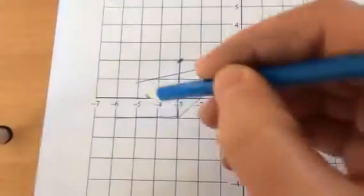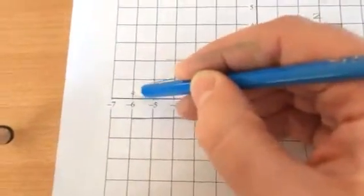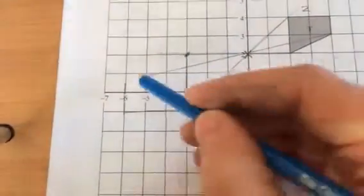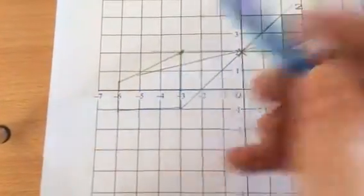That side there is 1. So that side is going to go up 1.5 to there along the minus 6 line. And then we connect there. And that is our shape.